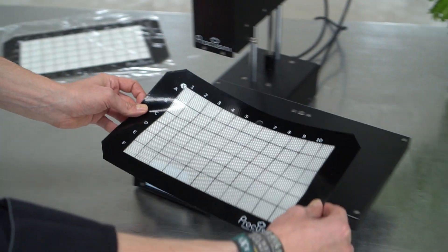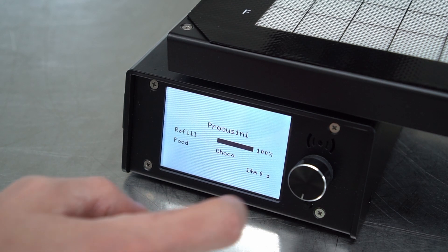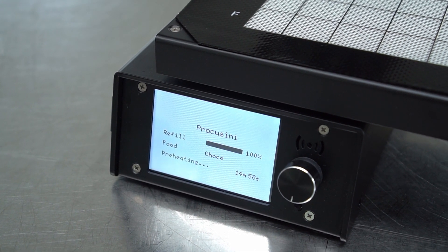Now preheat the Procossini and it will be ready for the first object to be printed. With one refill you can produce several objects depending on their size.